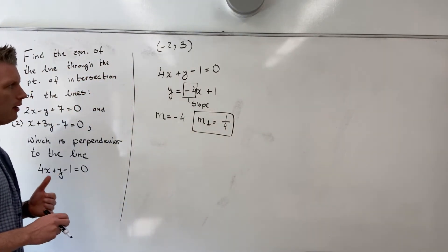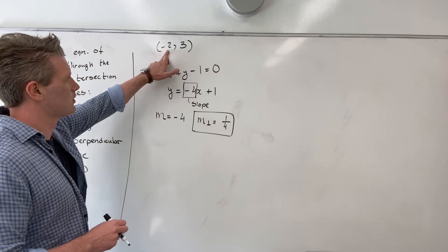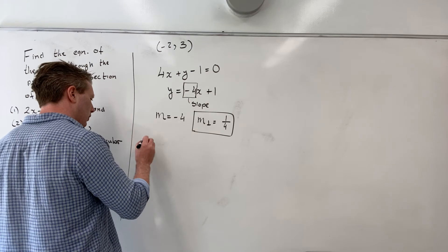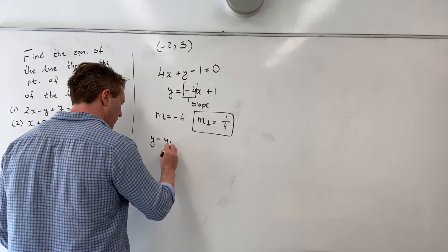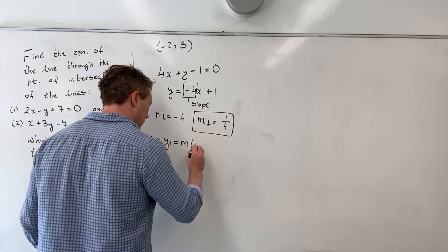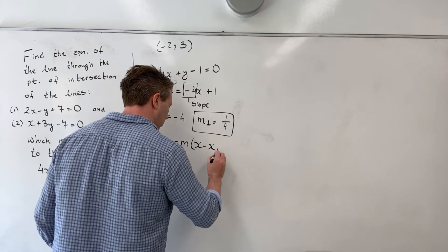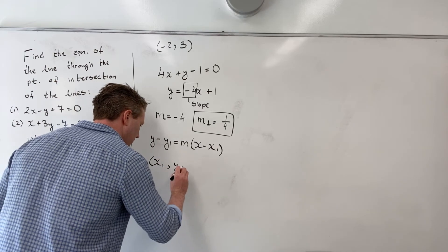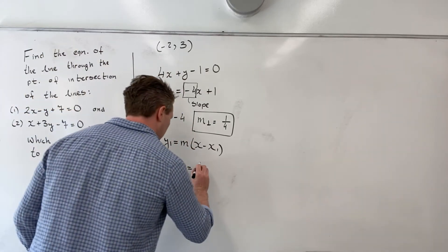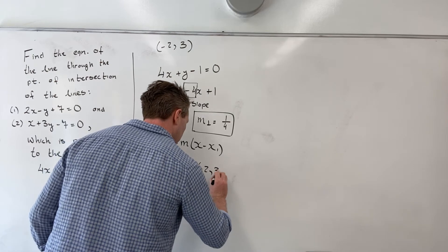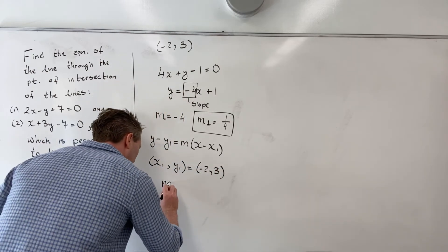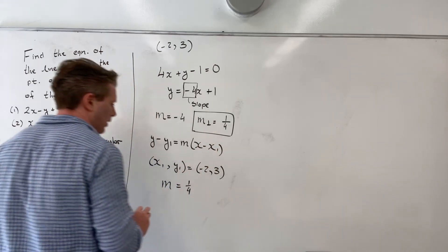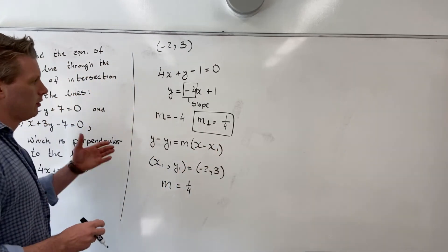All right, so now I have a point, minus 2, 3, and I have a slope of a quarter. So my point-slope formula is y minus y1 equals m times x minus x1. My point x1 comma y1 is minus 2, 3. My slope m here is 1 quarter. So I just have to now fill in the formula.